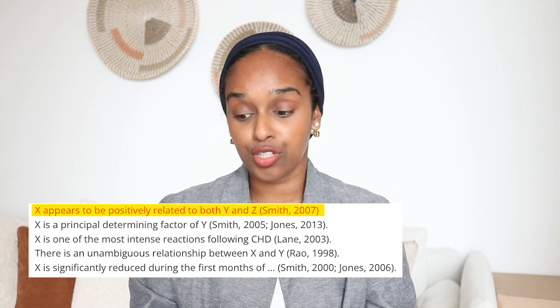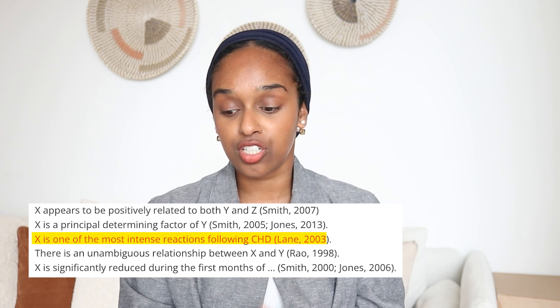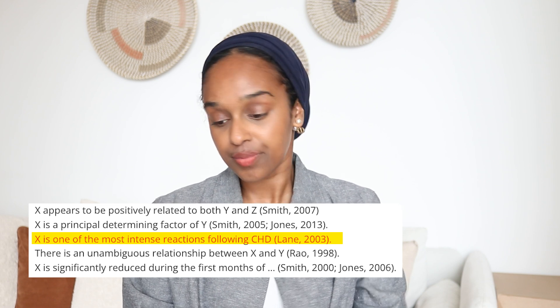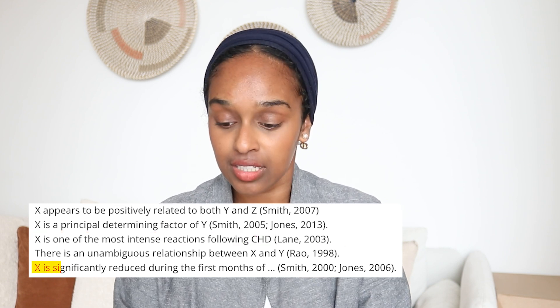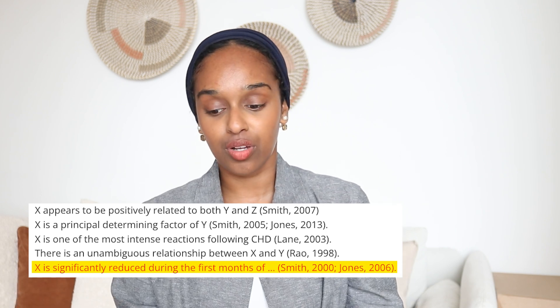Some ways to provide context include: 'X appears to be positively related to both Y and Z' — referencing at the end, of course — or 'X is one of the most intense reactions following CHD' — where CHD is a disease — or 'X is significantly reduced during the first months of...' and you go into more detail. All of these ways of providing context give the reader the information they need to understand what you want to present in your paper.